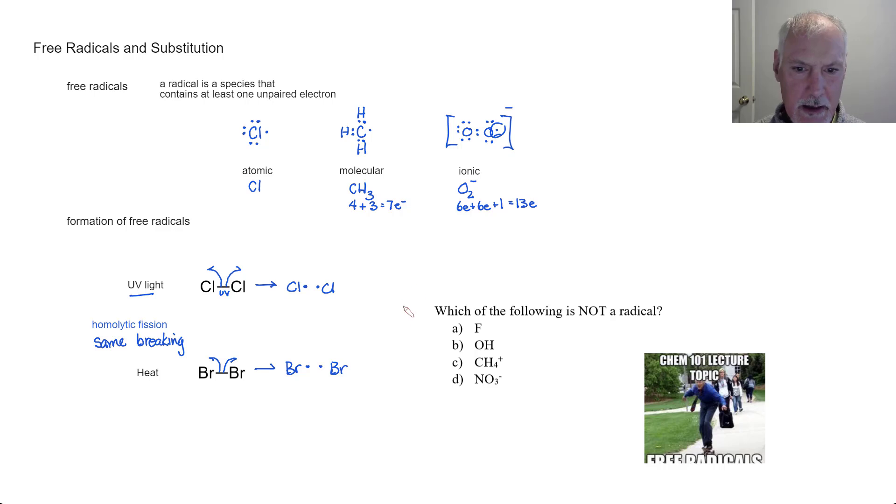Let's pause right now and see if we can determine which of the following is not a radical. So that means we're looking for something that does not have an unpaired electron. And the best way is to take a quick look at its Lewis formula. So fluorine, much like chlorine would have one unpaired. So it is definitely a radical.